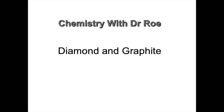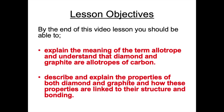Welcome to our latest video on diamond and graphite. This video is aimed at GCSE students and it is the third video in the series. You should have already watched the video on ionic and covalent bonding. By the end of this video lesson you should be able to explain the meaning of the term allotrope, understand that diamond and graphite are allotropes of carbon, and describe and explain the properties of both diamond and graphite and how these properties are linked to their structure and bonding.